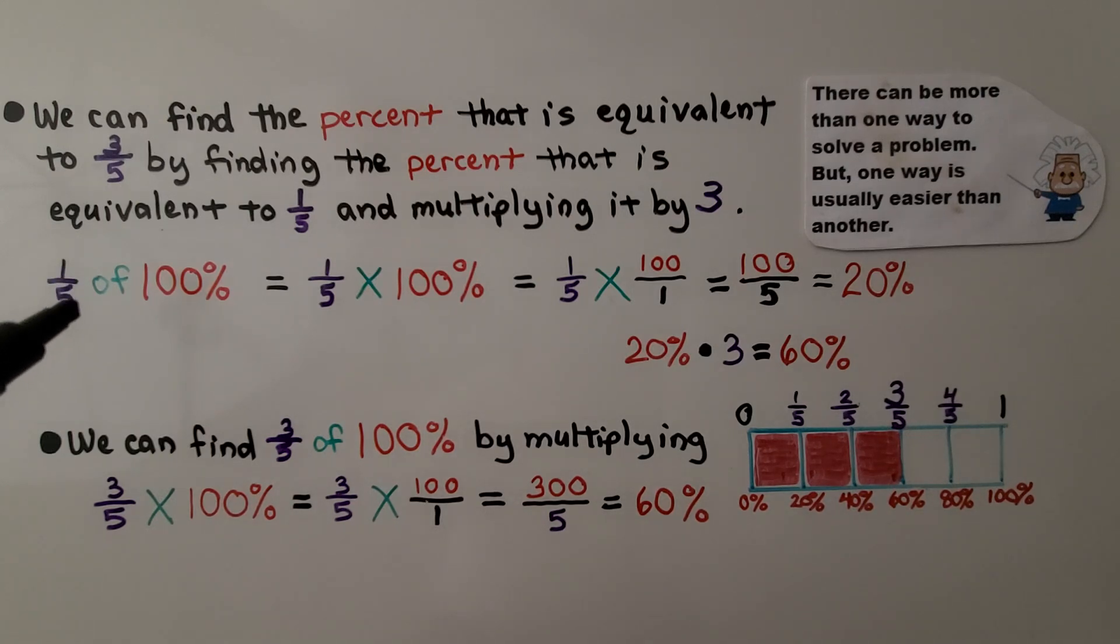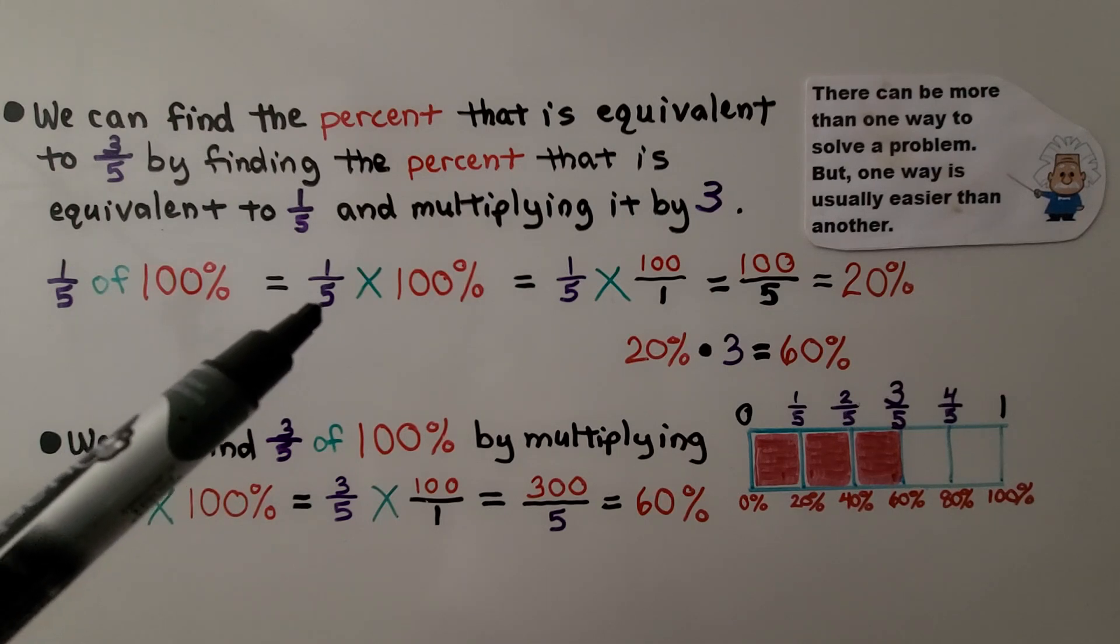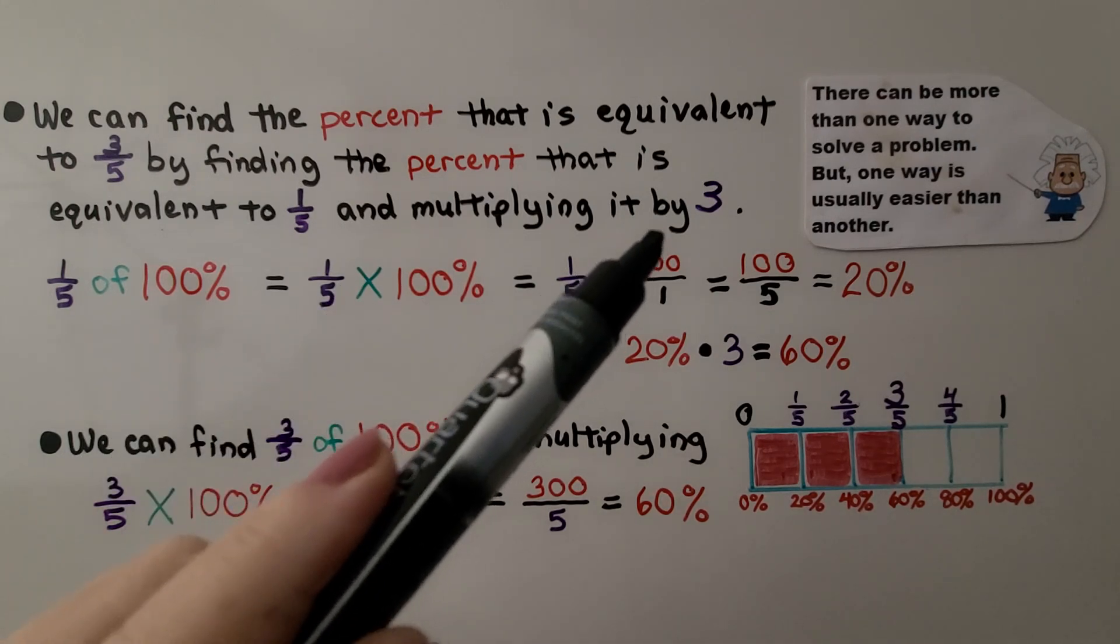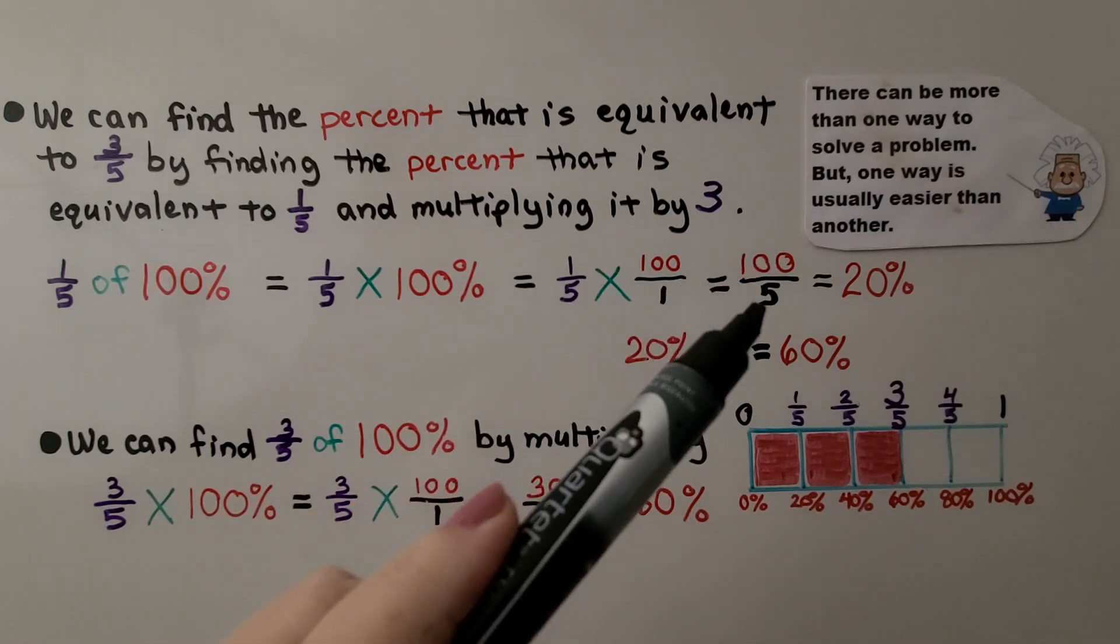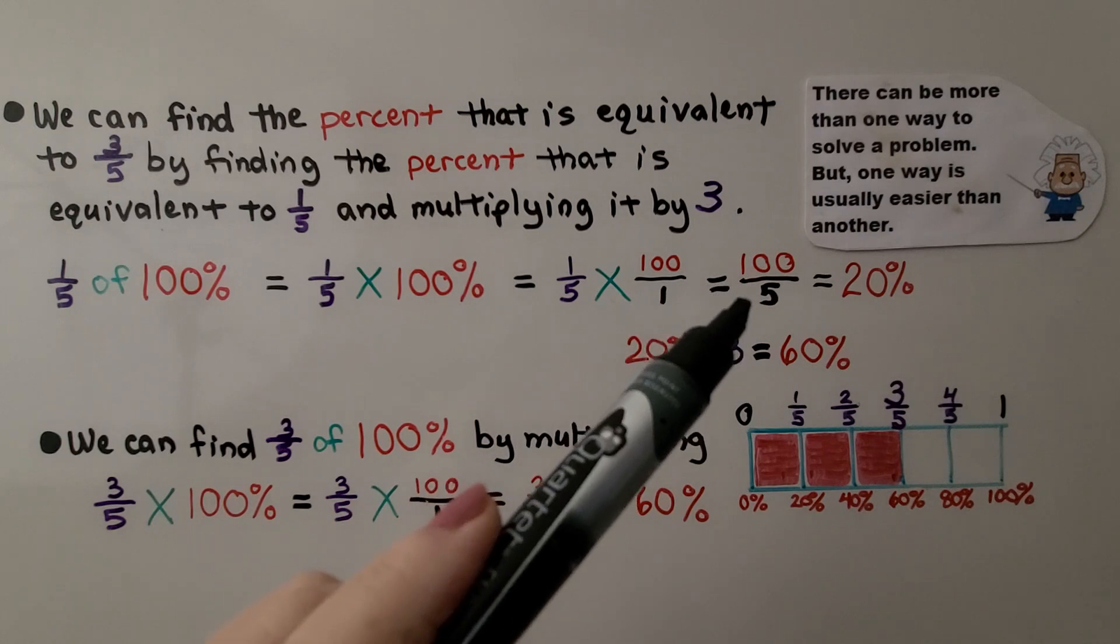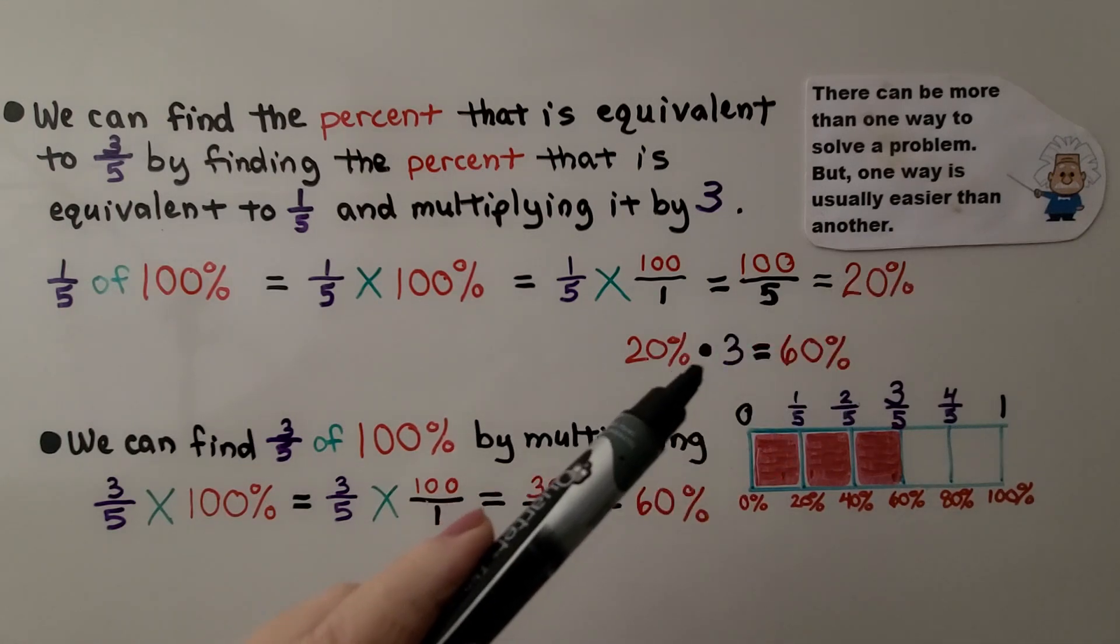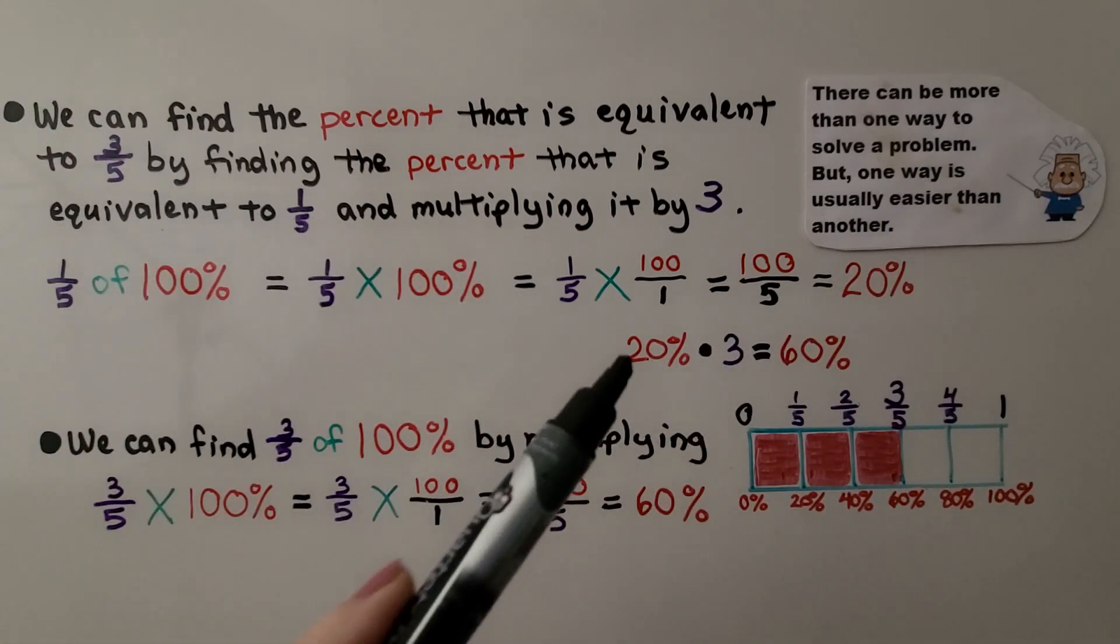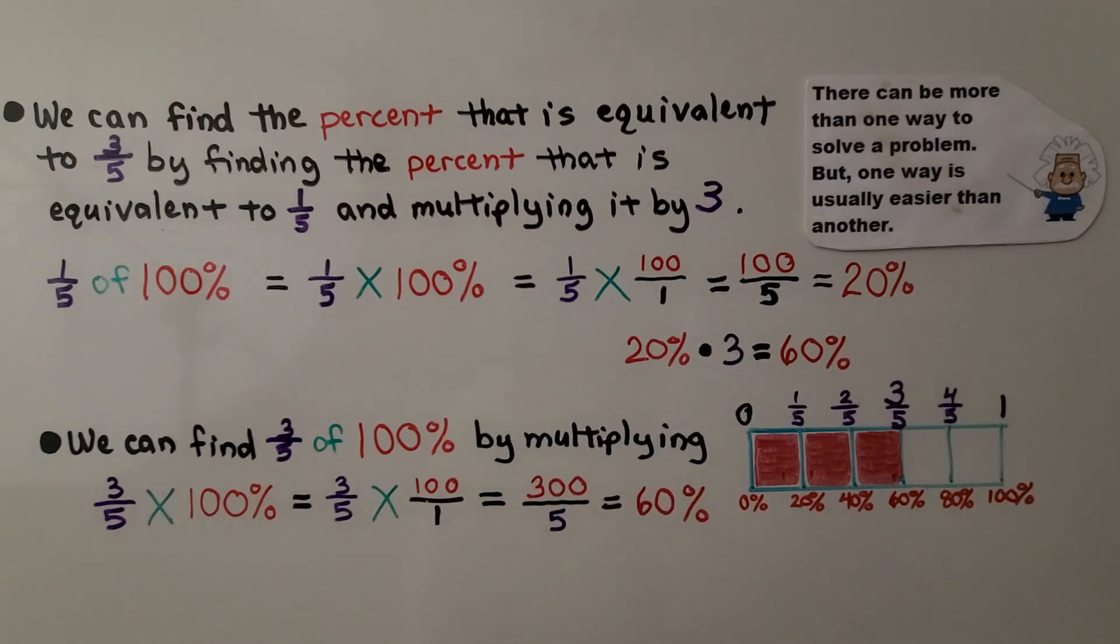We want to find 1 fifth of 100%. That's 1 fifth times 100%. That's 1 fifth times 100 over 1, which is equal to 100 over 5. And 100 divided by 5 is 20. That would be 20% for 1 fifth. Now we just multiply this by the 3, because we had 3 fifths. That would give us 20 times 3 is 60, so that's 60%.